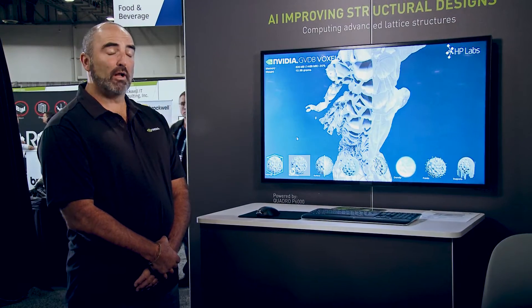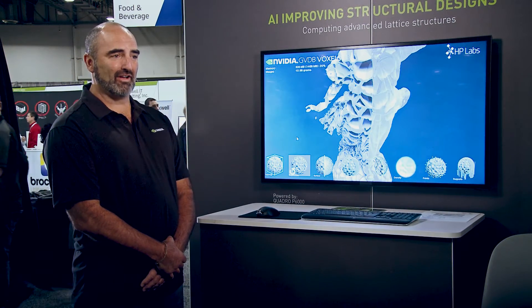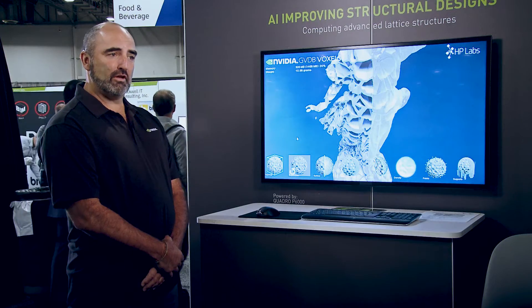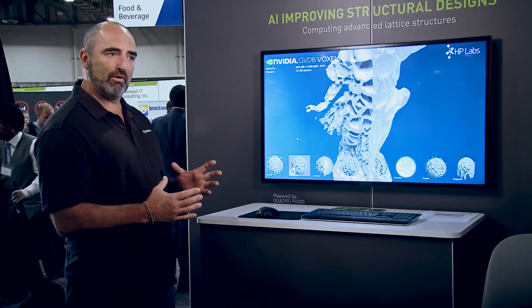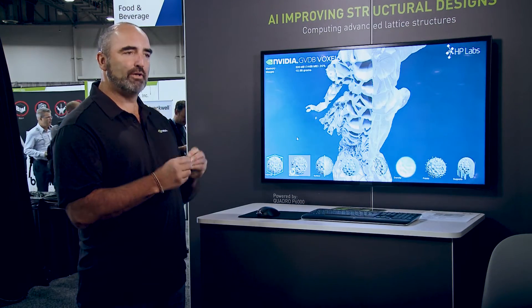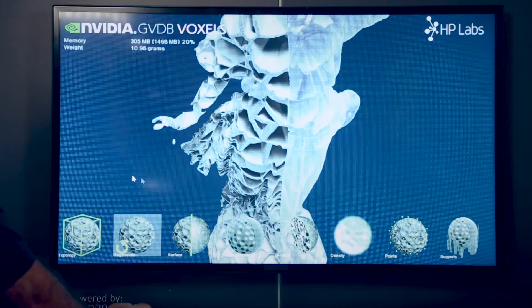The smallest building block of generative design is actually the voxel. It's the three-dimensional pixel we use for 3D printing, and GVDB is our SDK that NVIDIA has created that uses the GPU and its computational power to compute all those tiny little voxels.